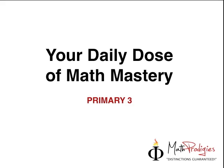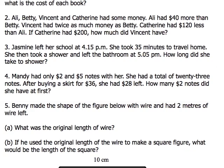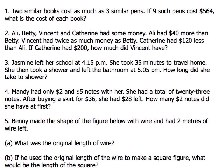The next question is something that always comes up in your exams. It's a simple question using models. Let's take a look at the question. It says Ali, Betty, Vincent, and Catherine had some money.